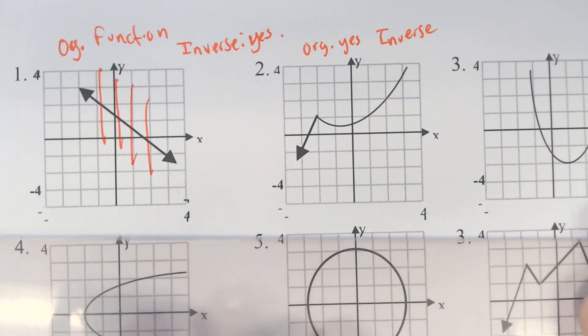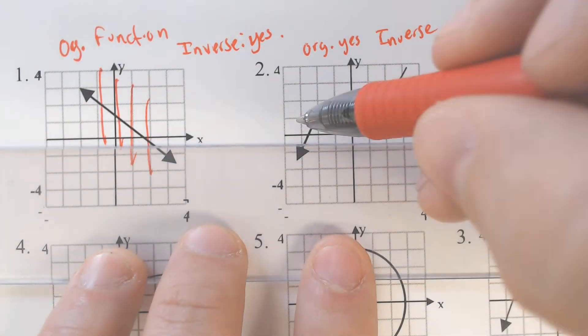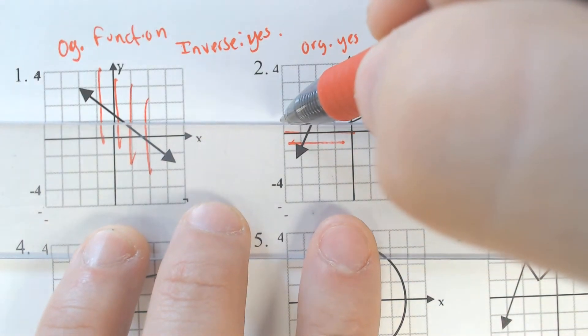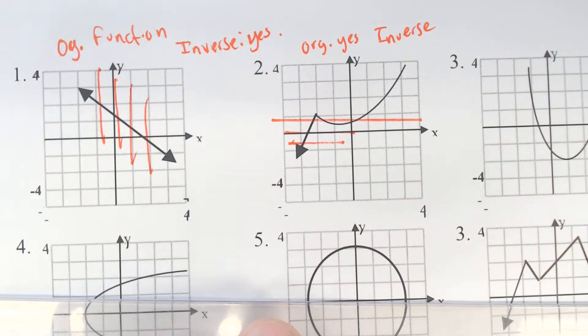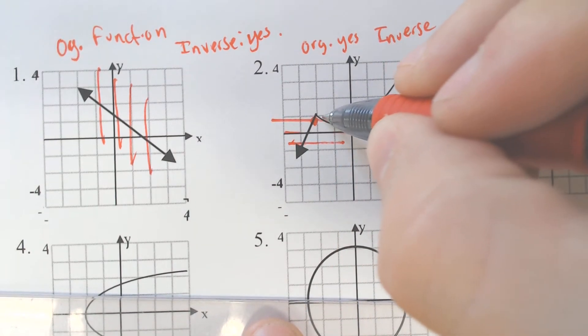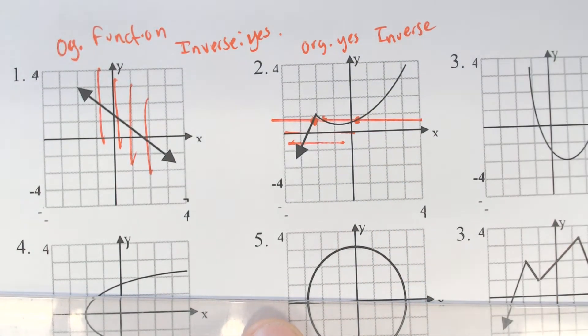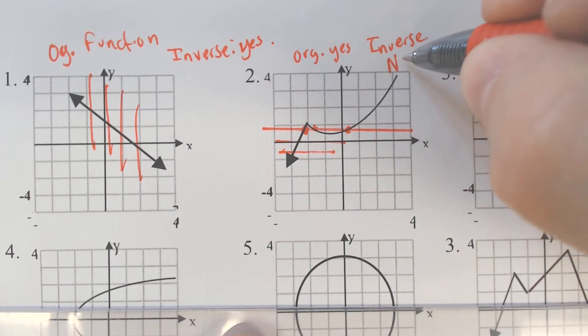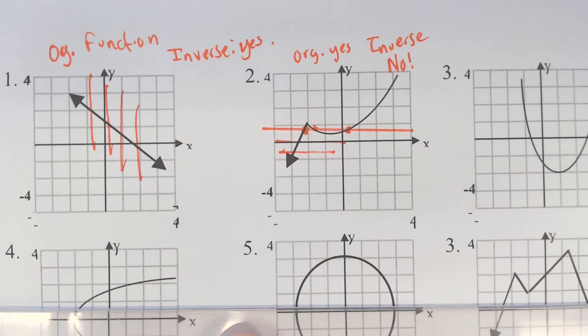If we were to draw a horizontal line, yes, we're good here, we're good here, but right about here, we fail. That horizontal line test crossed through not once, not twice, but maybe even three times. So because it failed the horizontal line test, the inverse is not a function.